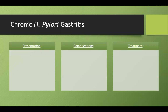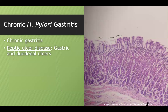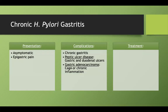For chronic H. pylori gastritis, the presentation is usually asymptomatic, but some people have epigastric pain. Complications include the chronic gastritis itself, and you can also develop gastric or duodenal ulcers — H. pylori is a big risk factor for peptic ulcer disease. You can also get cancer via the CAG-A oncogene. And the same progression as autoimmune gastritis can occur: normal cells → intestinal metaplasia → dysplasia → adenocarcinoma, driven by chronic inflammation.